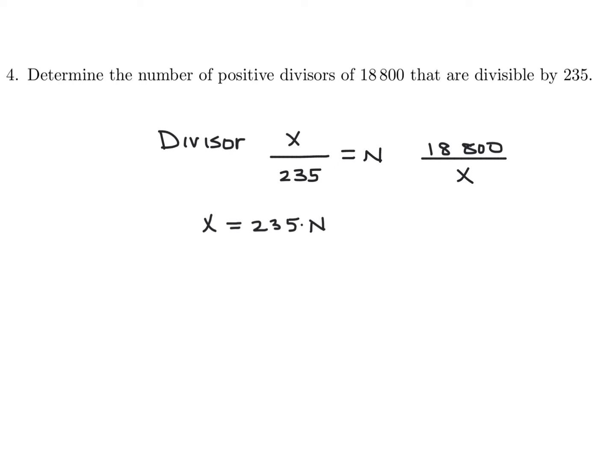All the divisors of 18800 that are also divisible by 235. Now, to help us figure out what this n will be, we need to just take this 18800 and divide it by 235 to see what is left over. And what is left over is 80. So, basically, what this question is saying is, what are the divisors of 80?